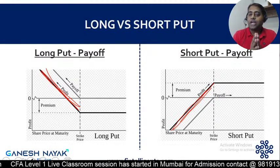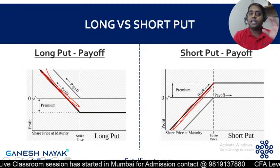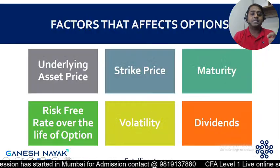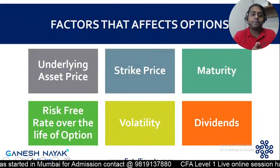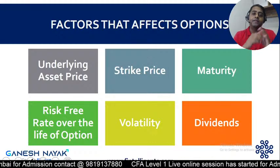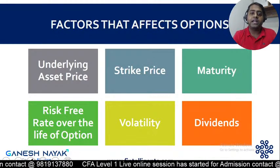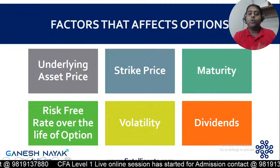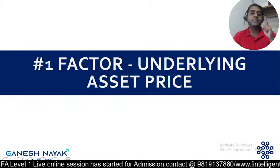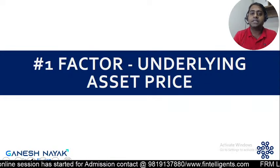Now let's come to the main agenda of this session: the factors that impact option price. There are six primary factors in the FRM curriculum — underlying asset price, strike price, maturity, risk-free rate, volatility, and dividend. I'll need your assistance in understanding these factors in detail, so think along as we go through each one.